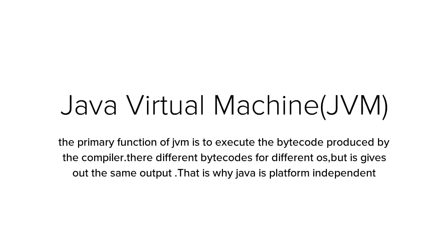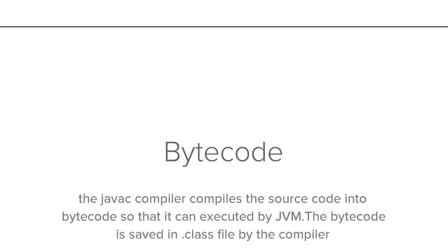Java Virtual Machine, also called as JVM. The primary function of JVM is to execute the bytecode produced by the compiler. There are different bytecodes for different operating systems, but it gives the same output for each and every operating system. That is why Java is said to be platform independent.